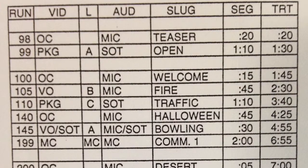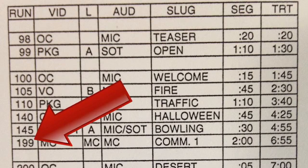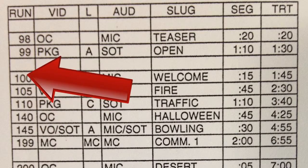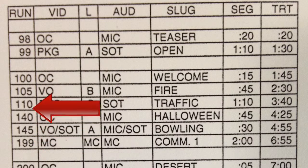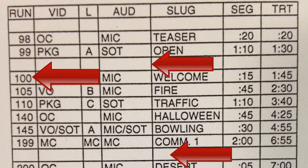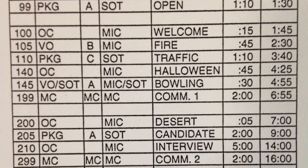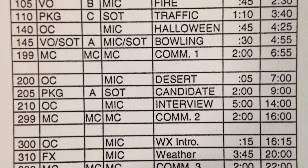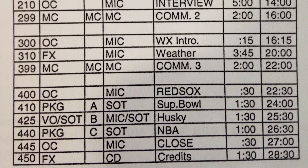The first section is the run, the segment number or identifier. In the run column, each section is identified by a multiple of 100. Each series of numbers is called a block, and blocks are separated by commercial breaks. There are normally 4 blocks in every half hour, and there can be up to 99 events within each block.